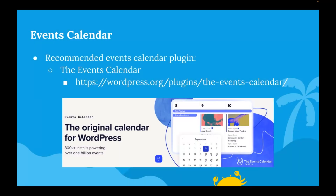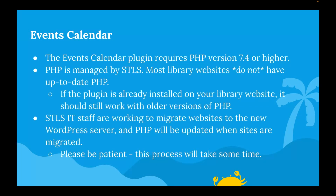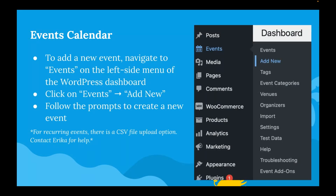The recommended events calendar plugin that STLS recommends for libraries is called The Events Calendar. We talked briefly about how this requires PHP version 7.4 — most STLS websites need to be updated and the IT team is working on that; you can't update PHP yourself, IT staff have to do it for you. You can still use the Events Calendar plugin to manage your events. On the dashboard in the left-side menu there's a tab called Events, highlighted in blue in the photo, and when you hover on it a pop-out menu appears with options like Events, Add New, Tags, and Event Categories.